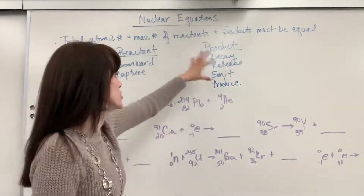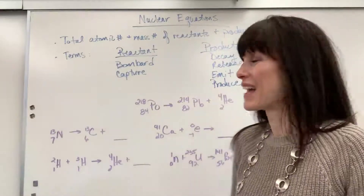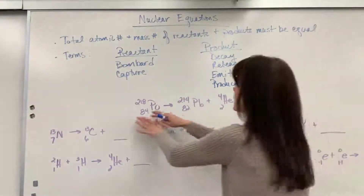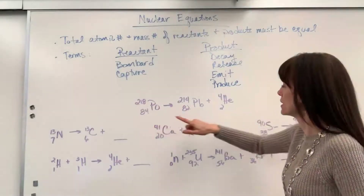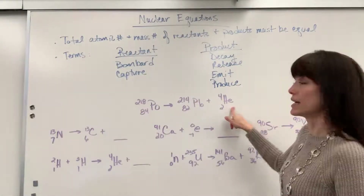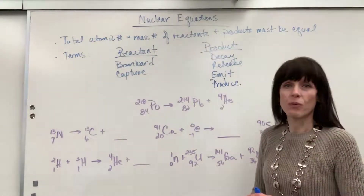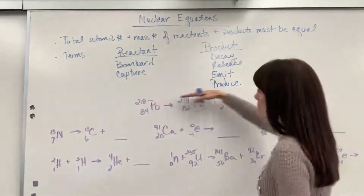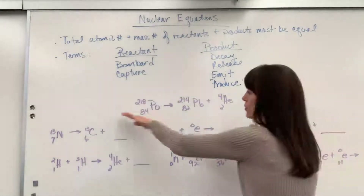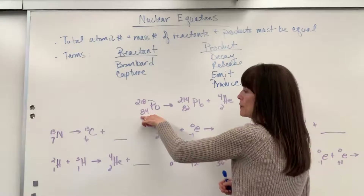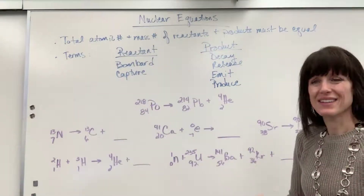I'm going to use this terminology as we're balancing these nuclear equations together. Here is our example — it's already been done for us. I have polonium-218 yielding lead-214 and an alpha particle, which is that helium. We want the total mass numbers on the reactant side to equal the product side, and the total atomic numbers on the reactant side to equal the product side.